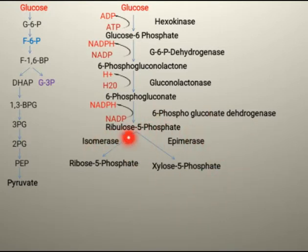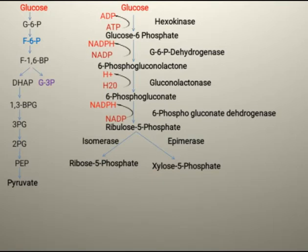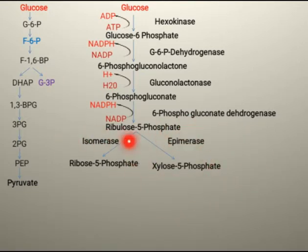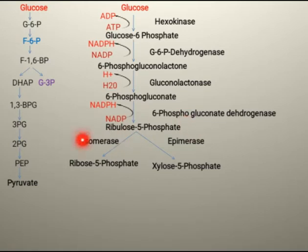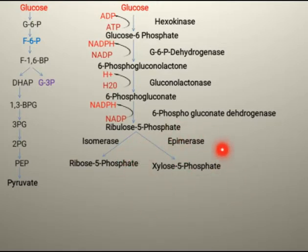So ribulose 5-phosphate can change into ribose 5-phosphate and into xylose 5-phosphate. All three are 5-carbon containing sugars. In a balanced reaction, ribulose 5-phosphate converts into ribose 5-phosphate with the help of isomerase enzyme, and into xylose 5-phosphate with the help of epimerase enzyme.